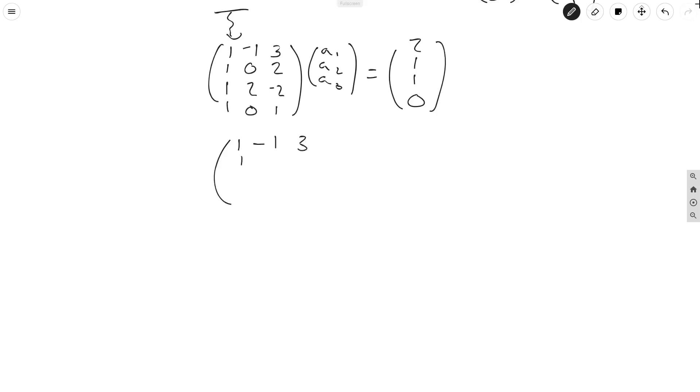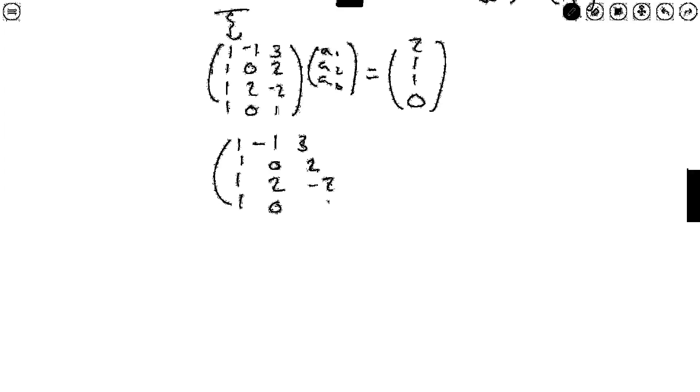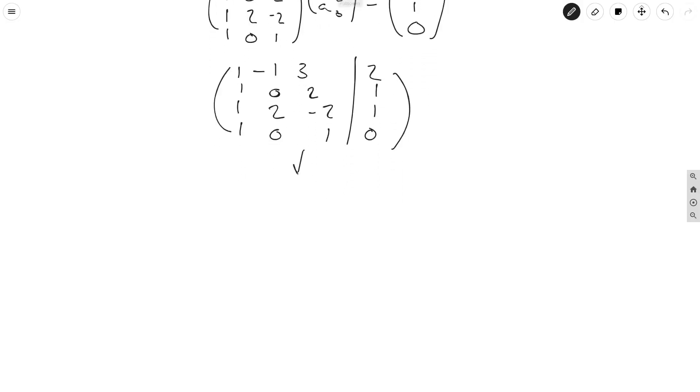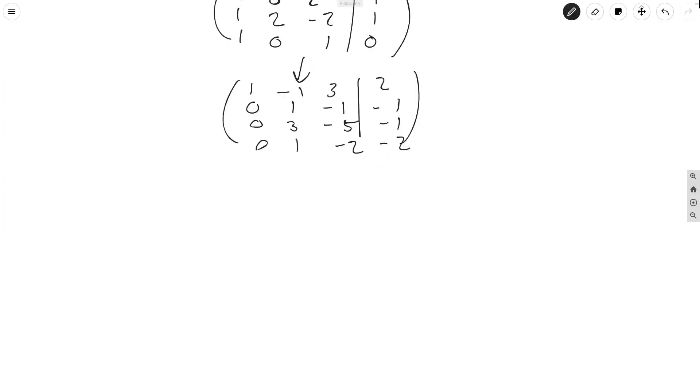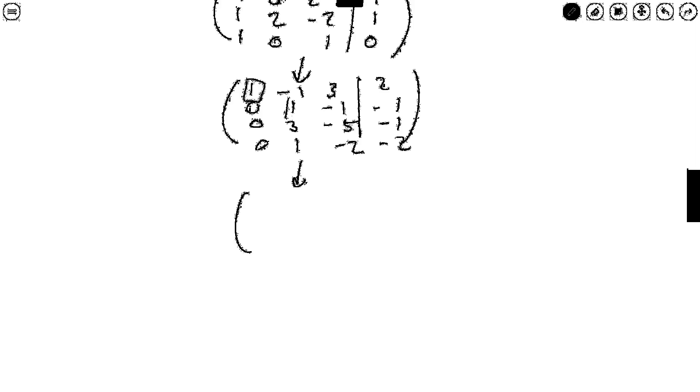The augmented matrix is [1,-1,3|2; 0,2,1|1; 2,-2,1|1; 0,1,0|0] and from here we just proceed with the normal Gaussian elimination to see if we get any solutions. So [1,-1,3|2] none of this will change, subtracting this off we'll get [0,1,-1|-1], subtracting this off we'll get [0,3,-5|-1] and subtracting this off we'll get [0,0,1|1,-2]. Okay let's subtract row 1 from all the lines.